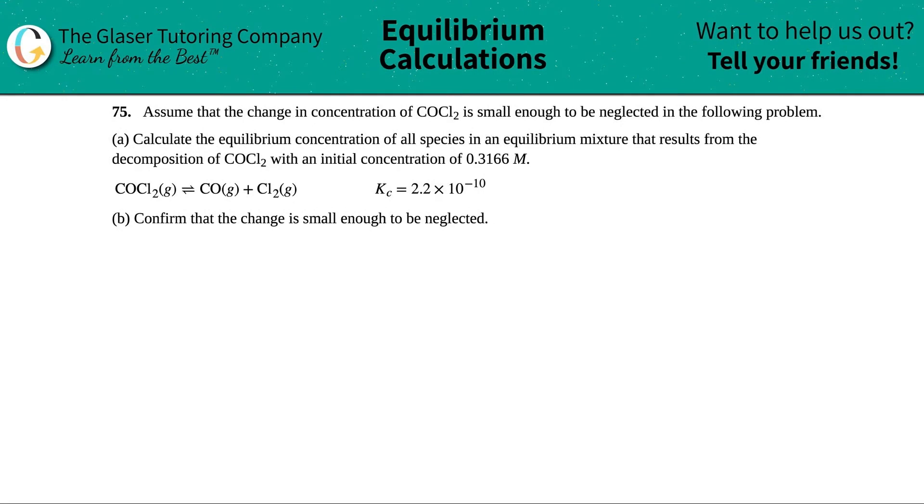Number 75. Assume that the change in concentration of COCl2 is small enough to be neglected in the following problem. For part A, calculate the equilibrium concentration of all species in an equilibrium mixture that results from the decomposition of COCl2 with an initial concentration of 0.3166 molarity. They give us an equation with the corresponding Kc value. The first thing I'm going to do is write this equation a little bit bigger. As I'm writing this, I don't see any coefficients, so I'm making sure that it's balanced. Remember, we always have to start with the balanced equation.